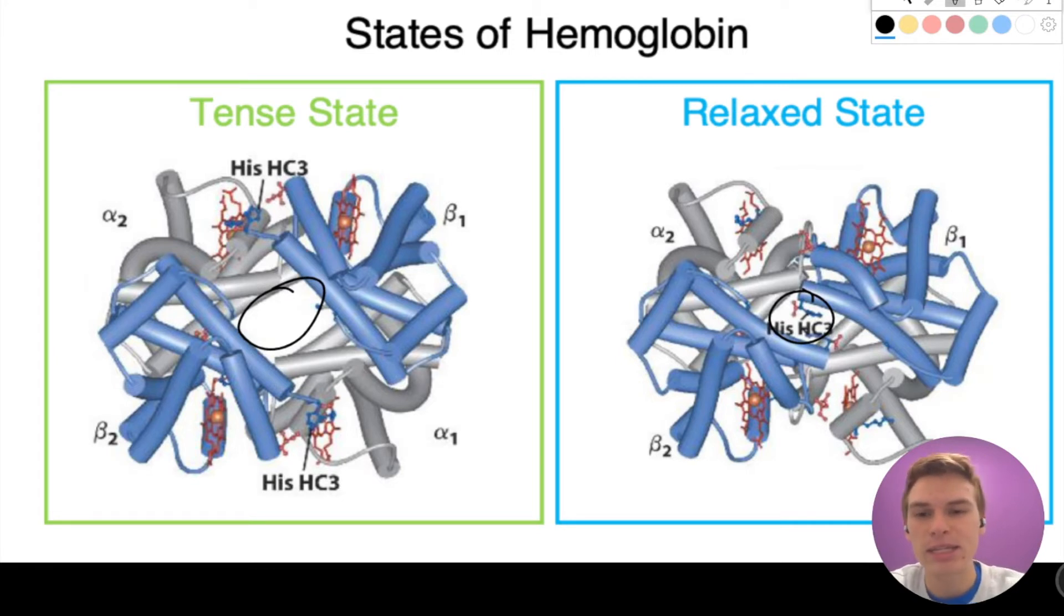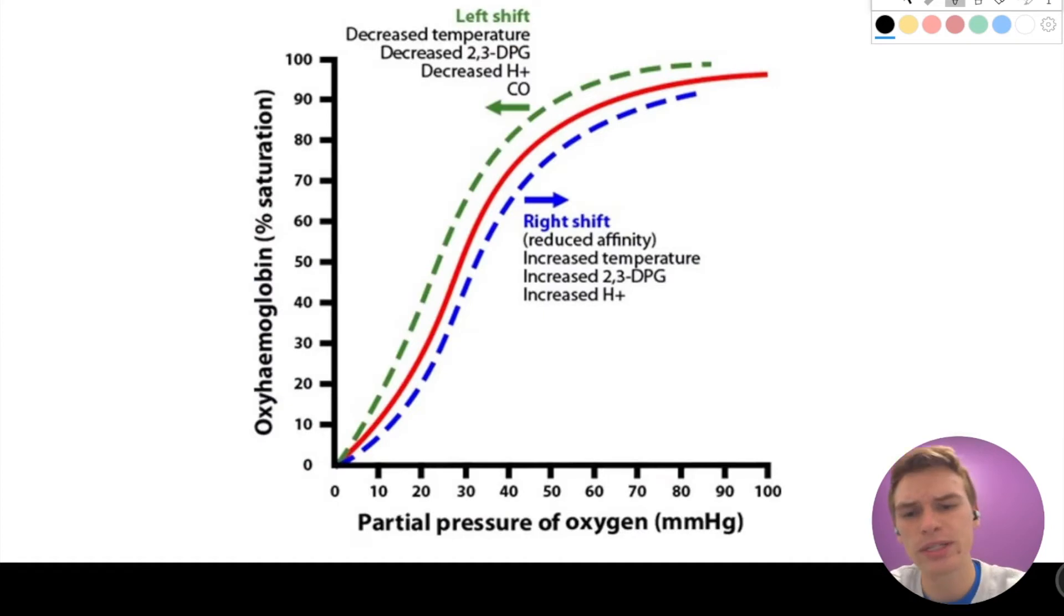And so what this means is that if one little subunit can change, it's going to make it so it's easier for all of the other subunits to change to the relaxed state as well. And if we're in a relaxed state, we accept oxygen a lot easier than in a tense state.